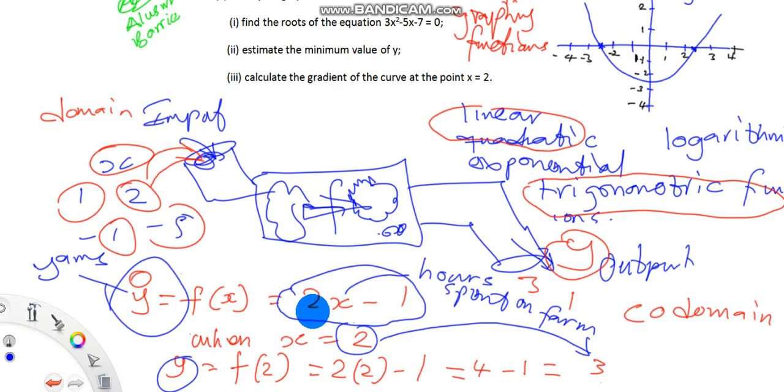We can use this function to describe how much yams he can get for different hours he spends on the farm. If he spends two hours he'll get three yams, if he spends one hour he'll get one yam. Try putting other values of x, which are the number of hours he can spend on his farm. This is a detailed overview of what functions are. If you have any issues, please go back into the full functions video where we deal with other examples of functions.